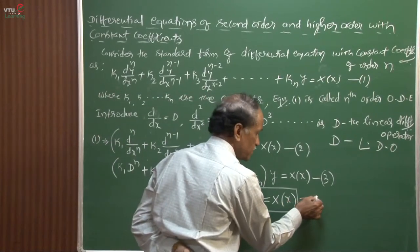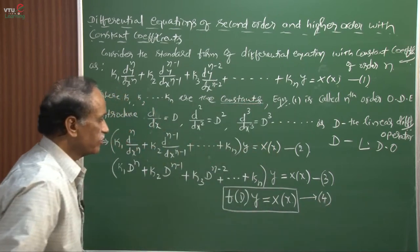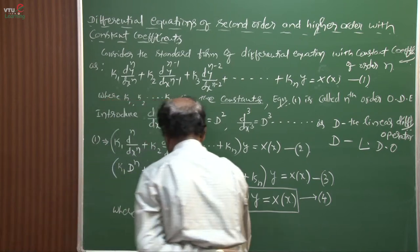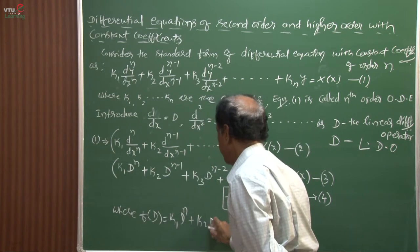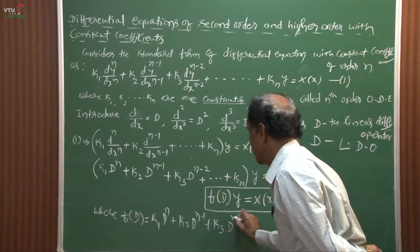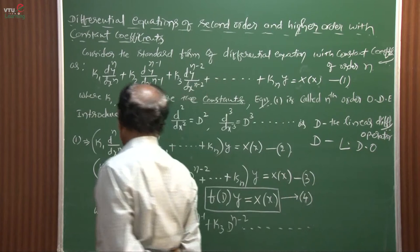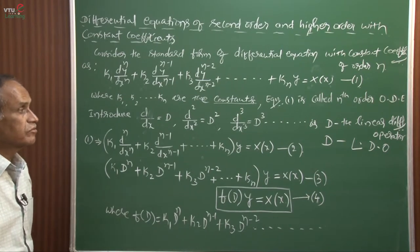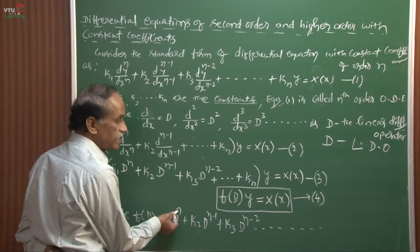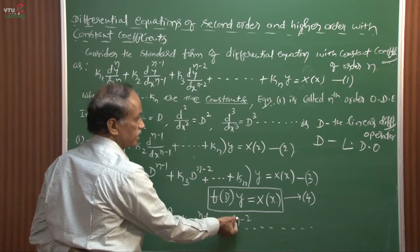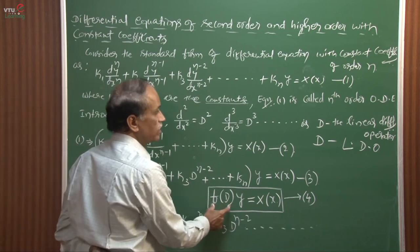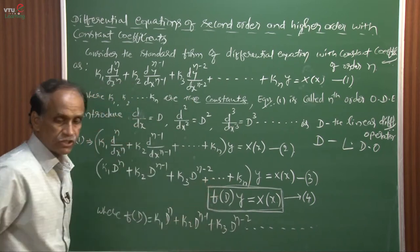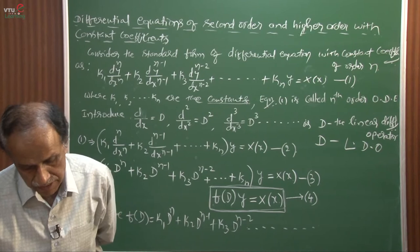Now, where f(D) = k1·Dⁿ + k2·Dⁿ⁻¹ + k3·Dⁿ⁻² + ... + kn, written in the decreasing powers of D — the highest power is n, then n-1, then n-2, in decreasing order. Therefore f(D) is the function of the linear differential operator, and f(D)y = X(x) is our discussion throughout this chapter on differential equations of second and higher order with constant coefficients.